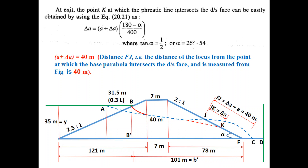The equation is: delta a = (a + delta a) × (180 − α) / 400, where tan α = 1/2. The downstream slope is 2H:1V, so dy/dx = 1/2. Therefore alpha = tan⁻¹(1/2), which gives an angle of 26.54 degrees.